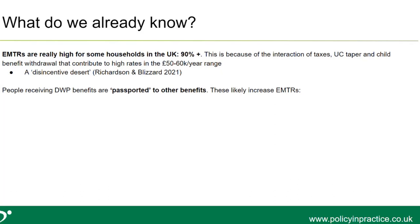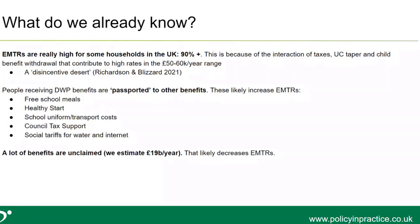We also know that people who receive certain benefits are passported into other benefits — free school meals and Healthy Start are two key ones. Different councils also have council tax support schemes and support for uniforms and school transport, all based on benefits you're already receiving. These likely increase effective marginal tax rates because more benefits are taken away when you leave eligibility for a passported benefit. Conversely, we know many eligible benefits are not claimed, which decreases effective marginal tax rates because those benefits aren't being tapered away.